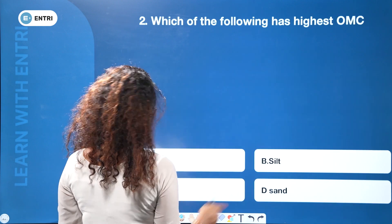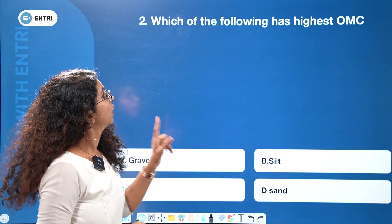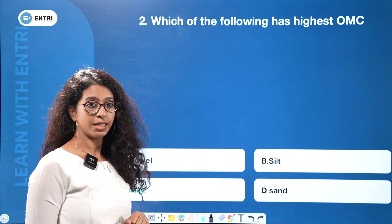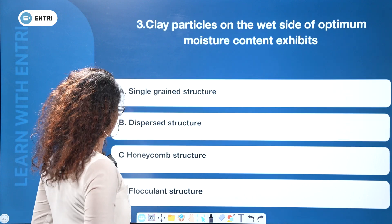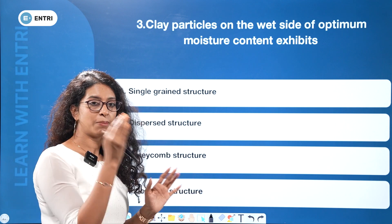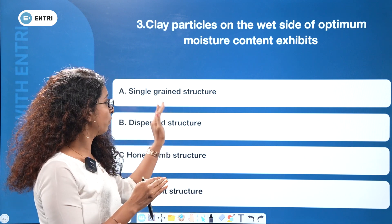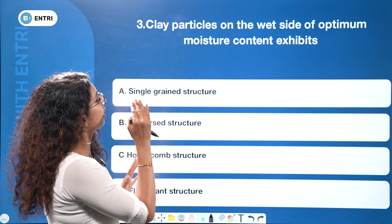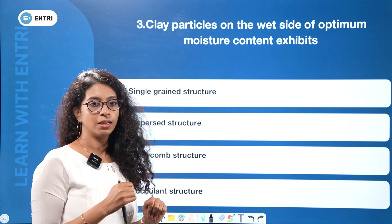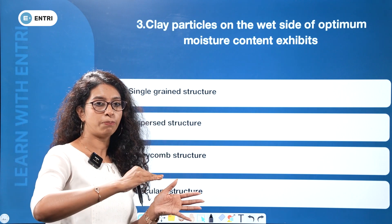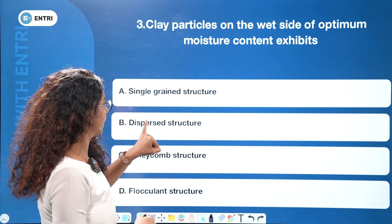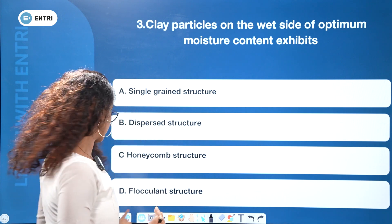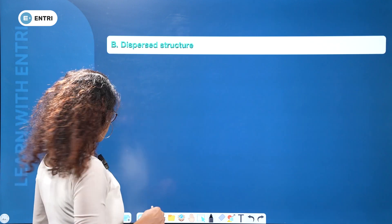Next question: which of the following has the highest optimum moisture content? Clay has the highest optimum moisture content. Now, regarding the wet side of optimum — clay particles on the wet side of optimum moisture content exhibit a dispersed structure. The answer is dispersed structure.